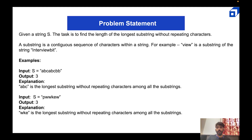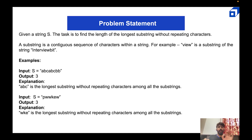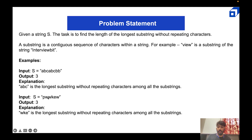Let's understand the problem statement. Given a string S, the task is to find the length of the longest substring without repeating characters. For example, in 'abcabc' the answer is three because 'abc' is the longest substring without repeating characters. Similarly, 'bwwkew' — 'b' and 'w' are repeated, so 'wke' or 'kew' would be the longest substring without repeating characters, giving a length of three.